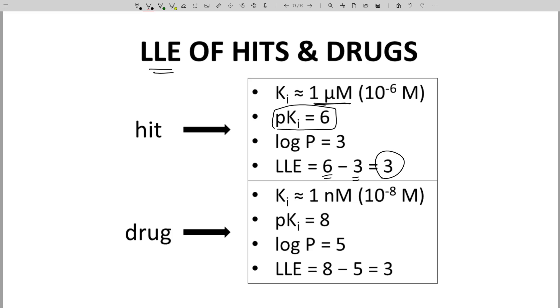How about a drug? Ki is around—this should be 10 nanomolar, which is 10 to the minus 8 molar. So pKi is 8. Log P is at most 5. 8 minus 5 equals 3. So we get 3 again.